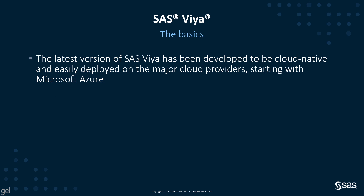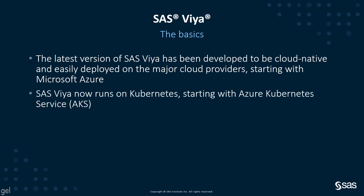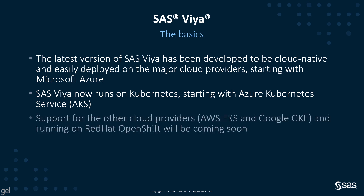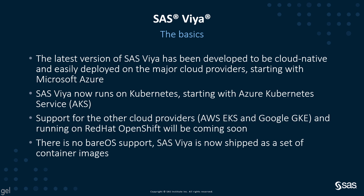SAS Viya basics. The latest version of SAS Viya has been developed to be cloud native and easily deployed on the major cloud providers, starting with support for Microsoft Azure. SAS Viya now runs on Kubernetes, and the first support is for the Azure Kubernetes Service, or AKS. Support for the other cloud providers — the AWS Elastic Kubernetes Service, Google's Kubernetes Engine, and Red Hat OpenShift — will be coming soon. There is no bare OS support with the latest version of SAS Viya.